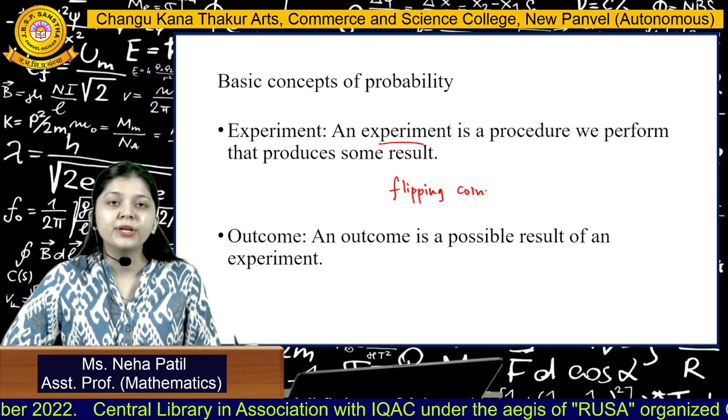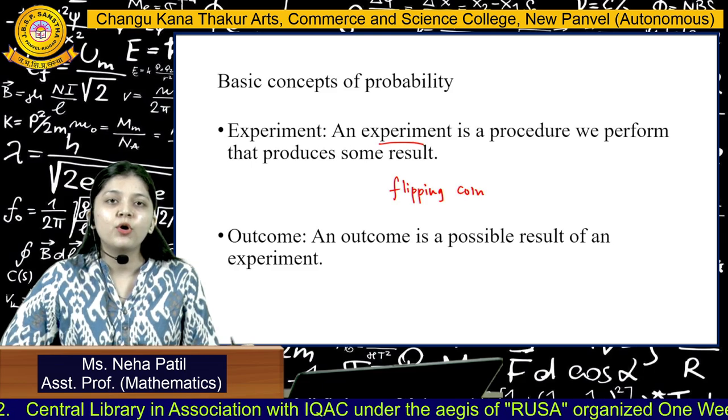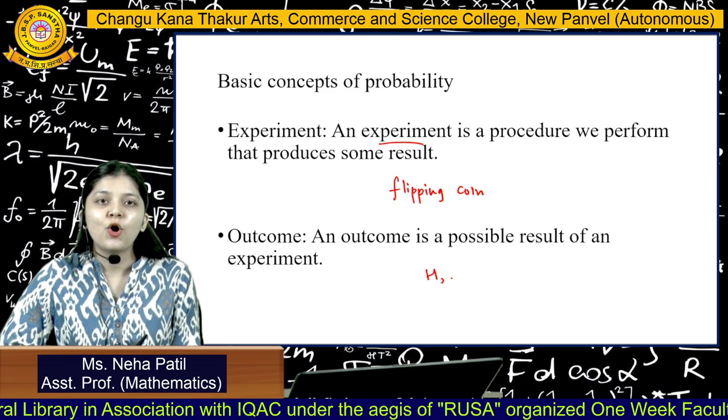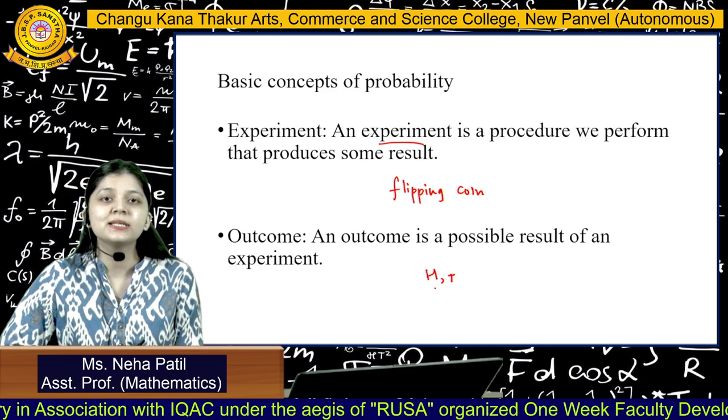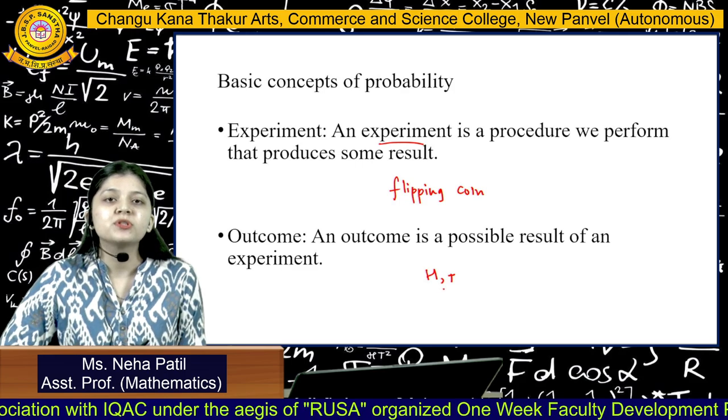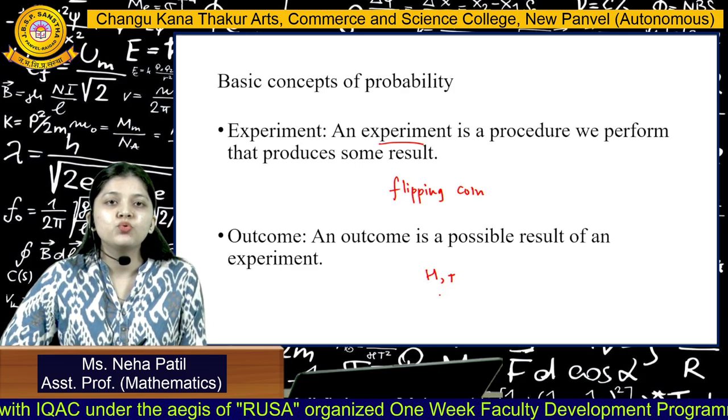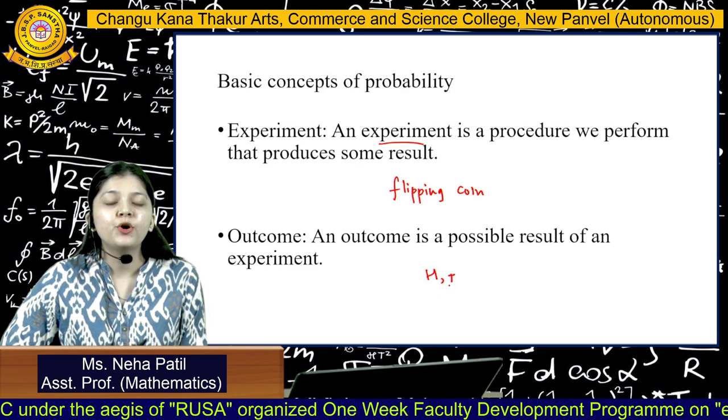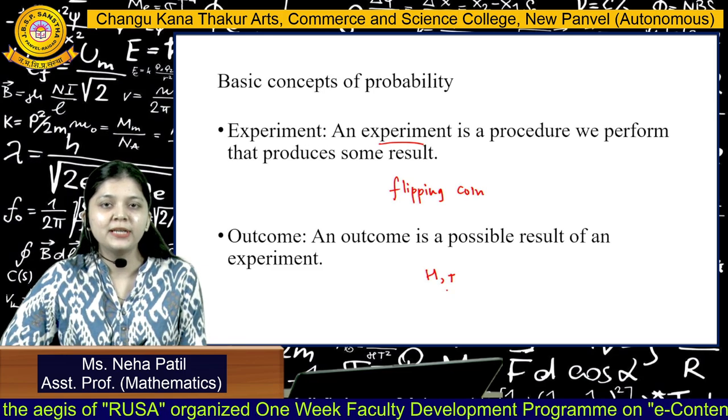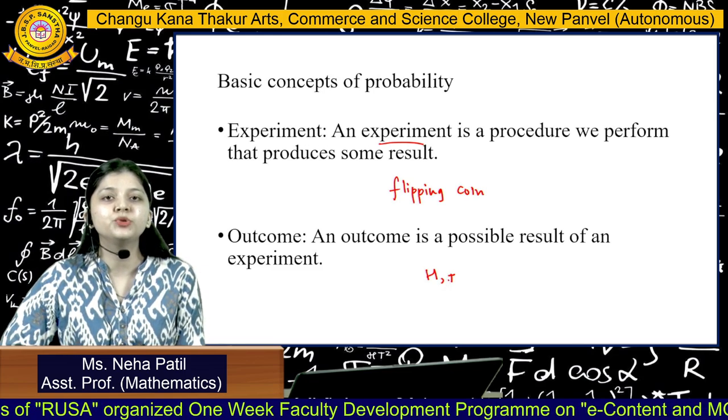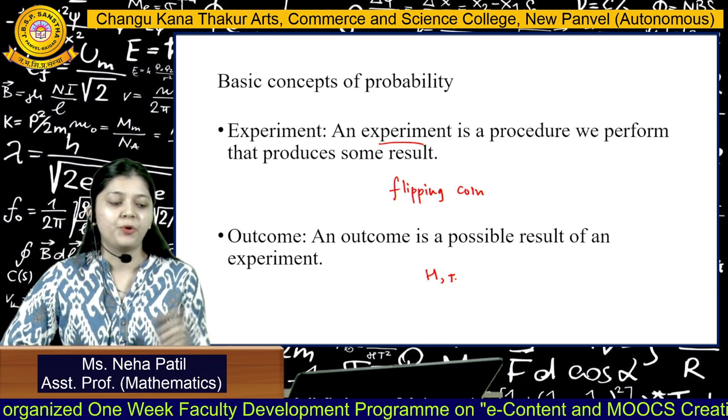Whenever we are flipping a coin, we know that it will always result in either a heads or a tails. So this heads and tails, these are your possible outcomes. Out of these two, no other outcome will appear on the coin. So the number of possible outcomes total is the result of an experiment.